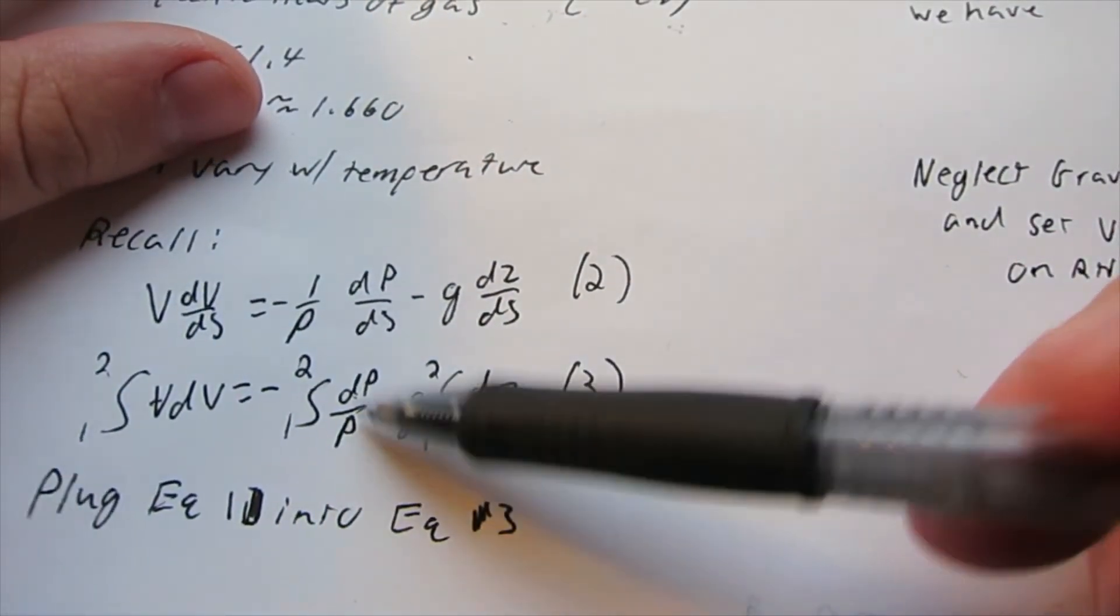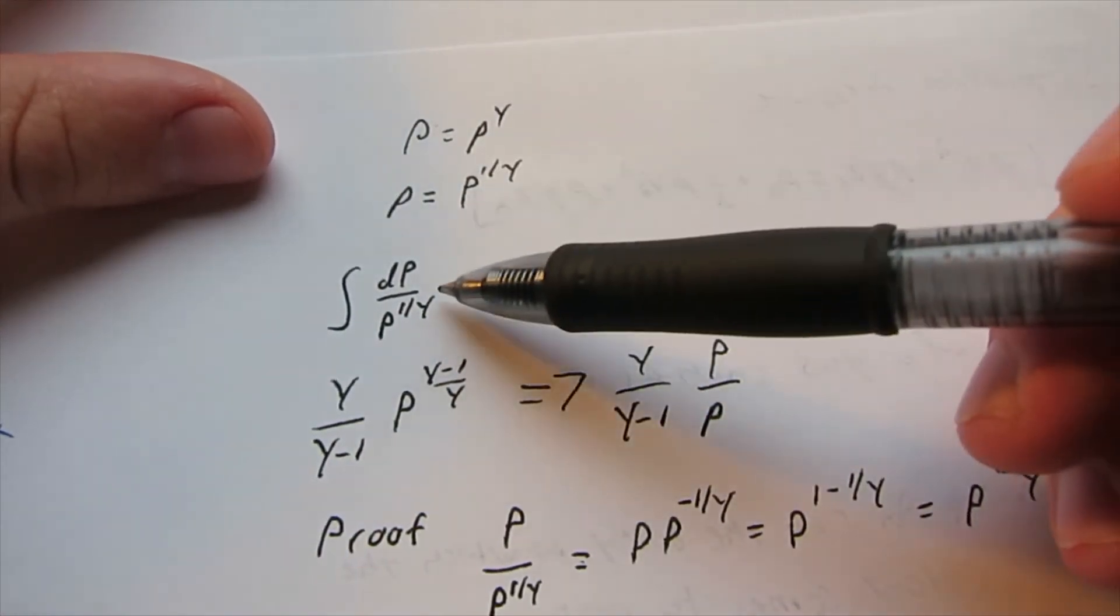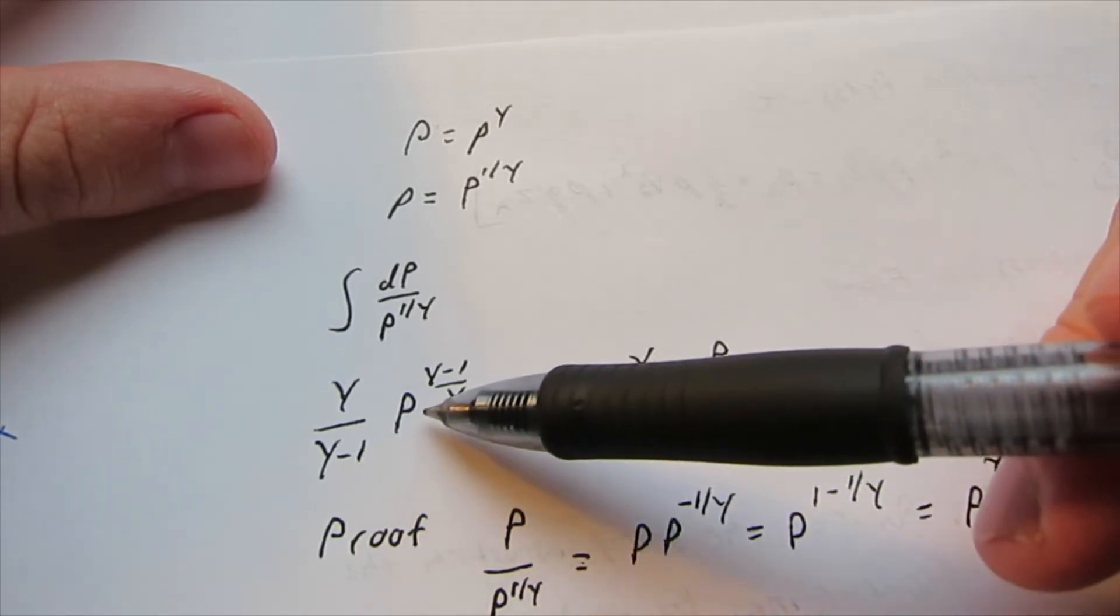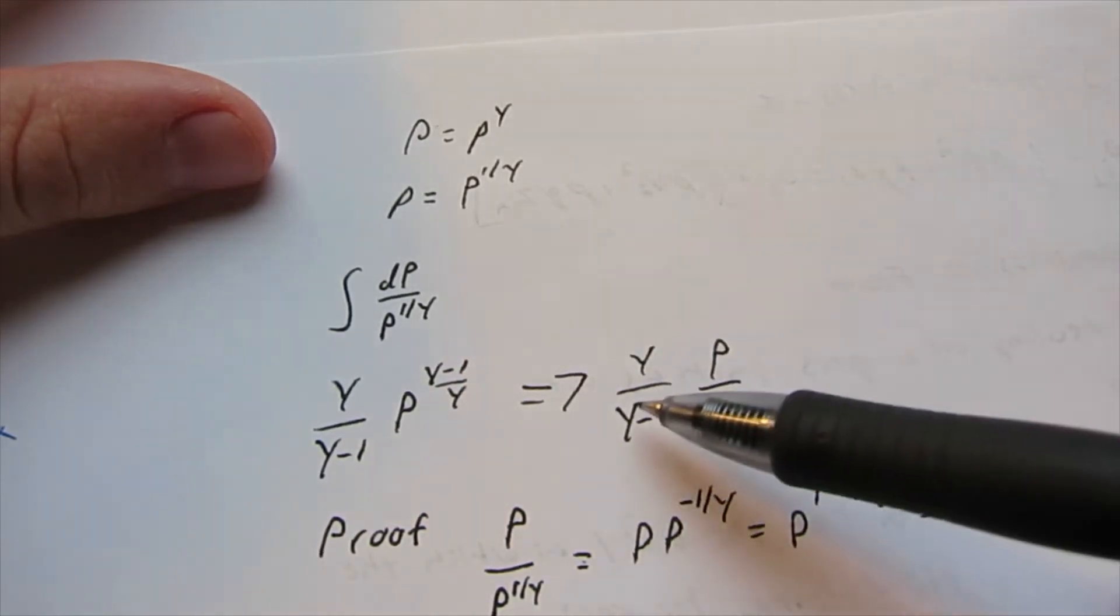And now looking back at this term here, we can integrate that, and we get gamma over 1 minus gamma pressure to the gamma minus 1 over gamma.